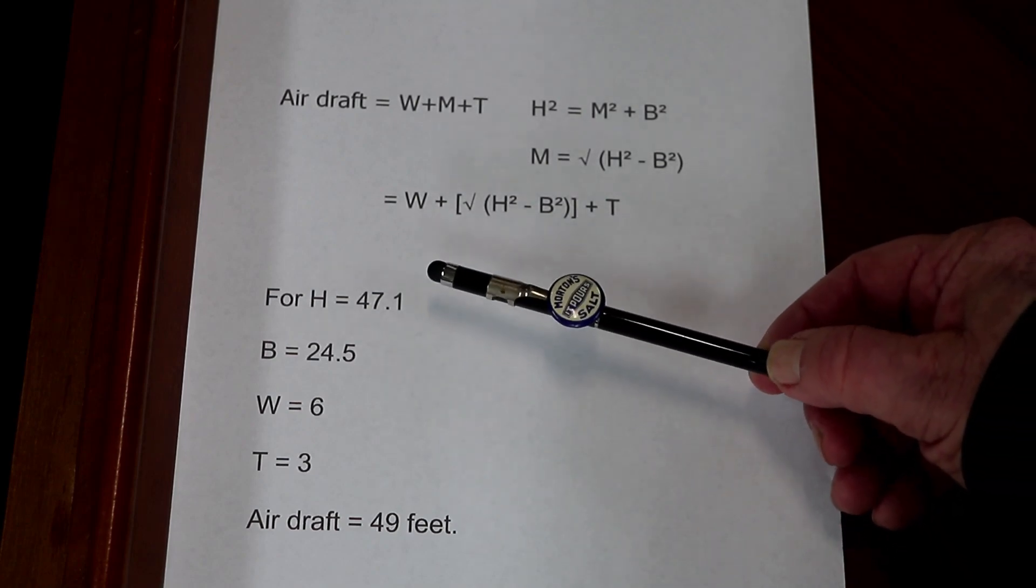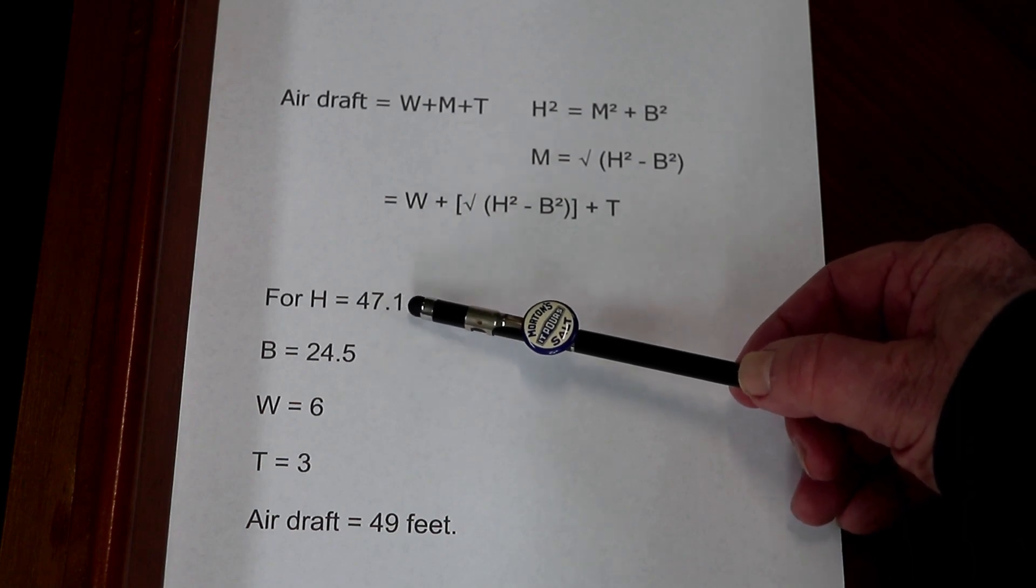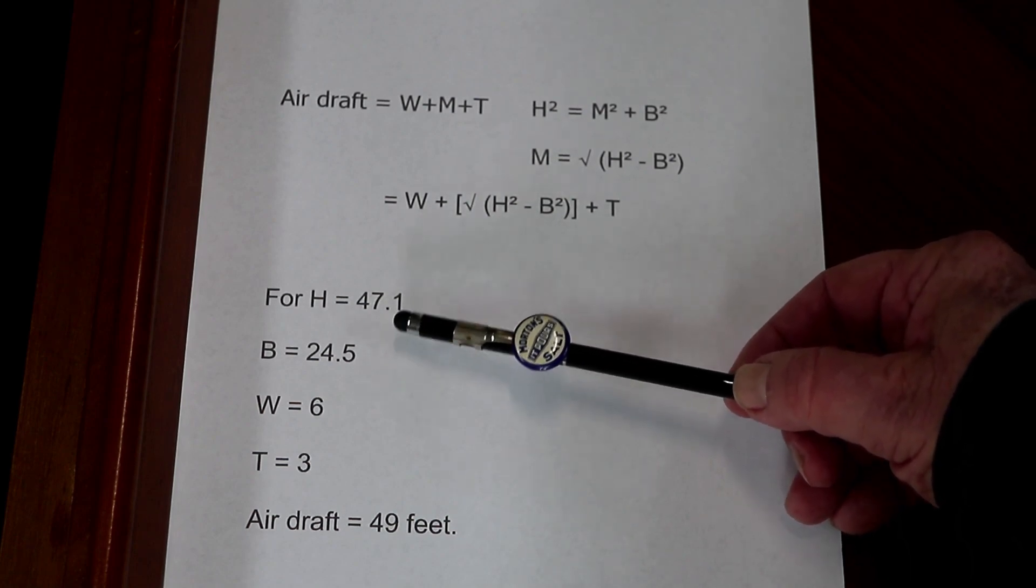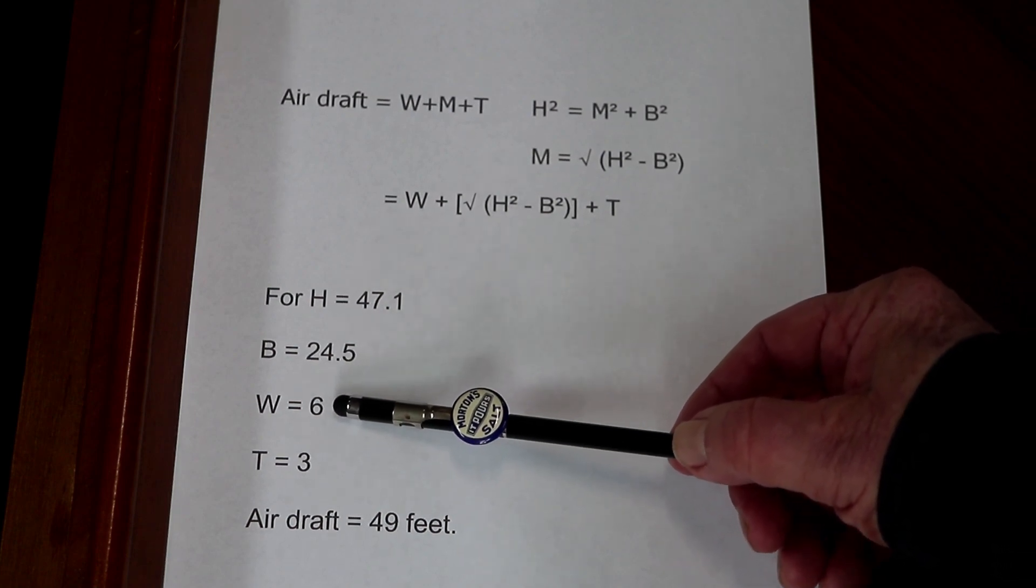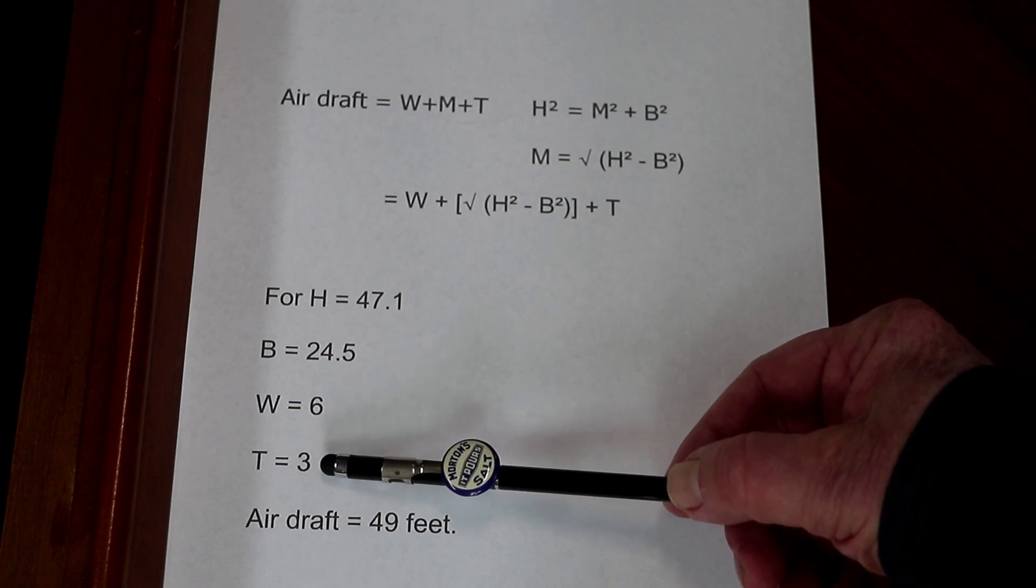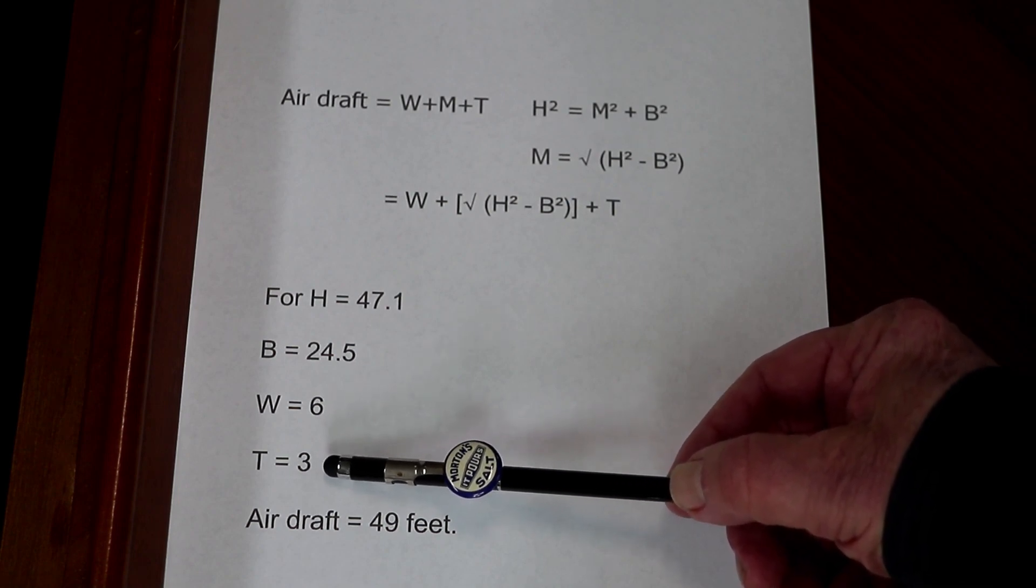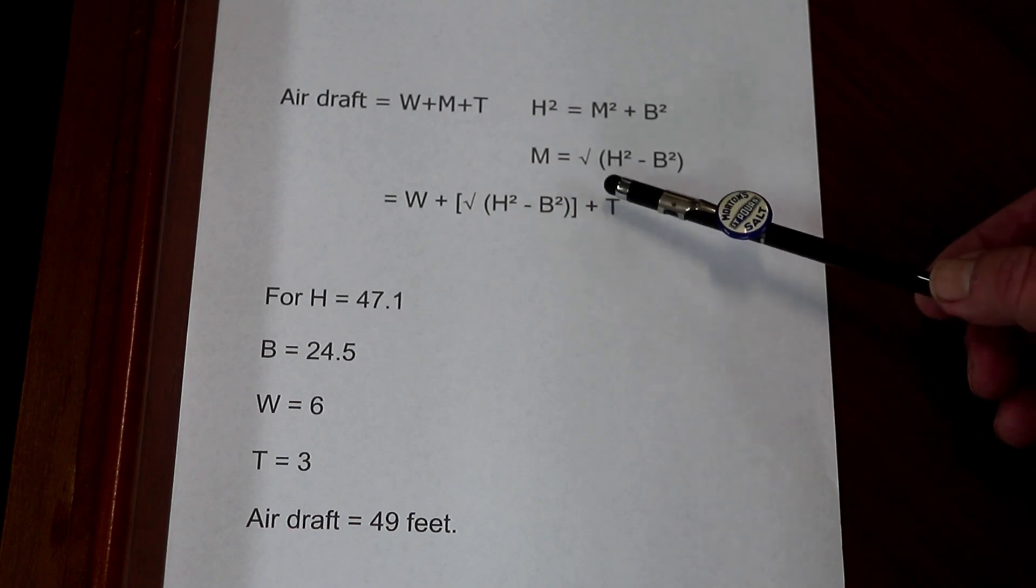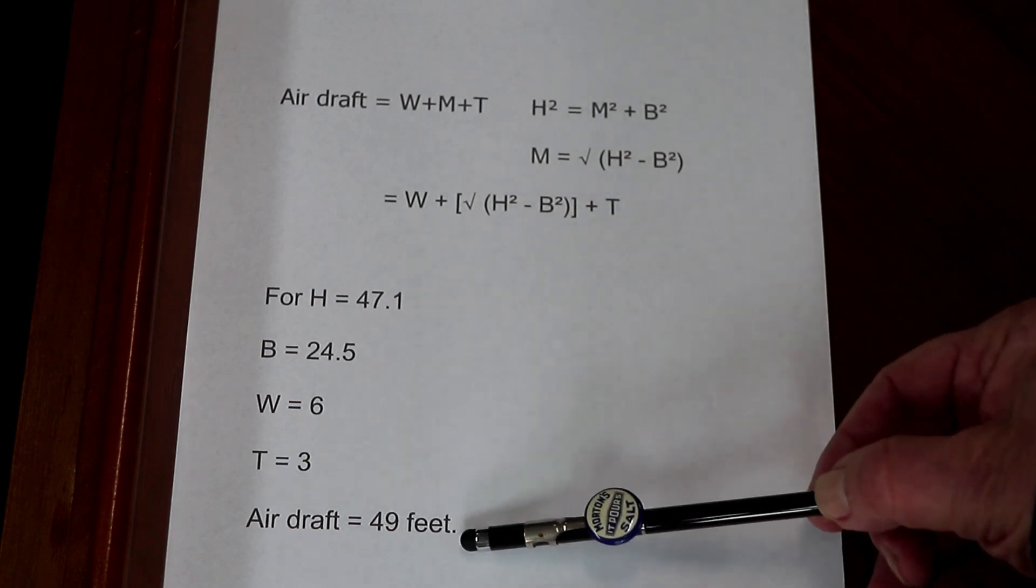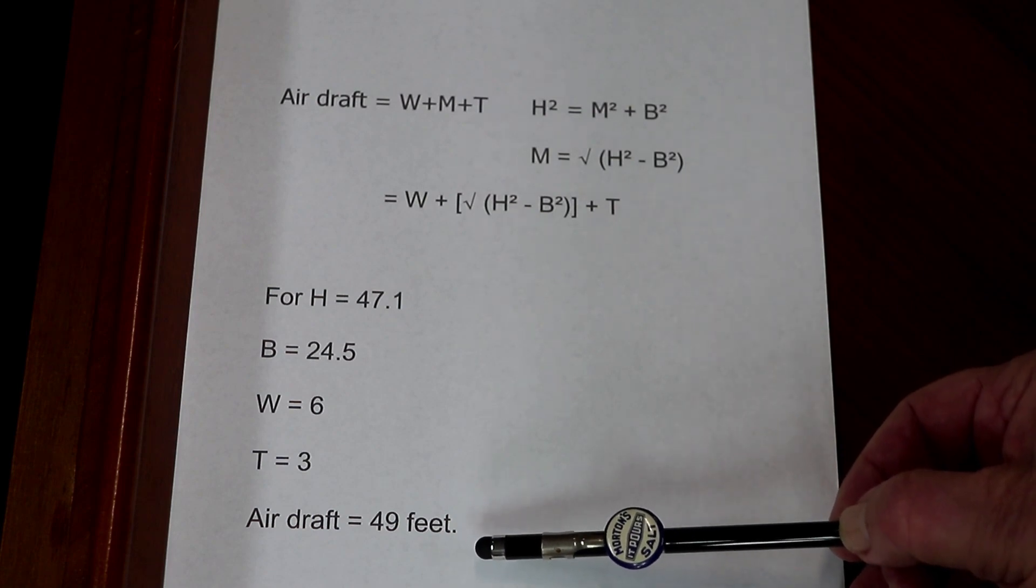For this particular measurement, the hypotenuse was 47.1 feet, the base was 24.5 feet, the laser tool was held 6 feet above the water, and the antenna on top of the mast was 3 feet. Putting those numbers into this equation and doing the crunch, you get an air draft of 49 feet for this vessel.